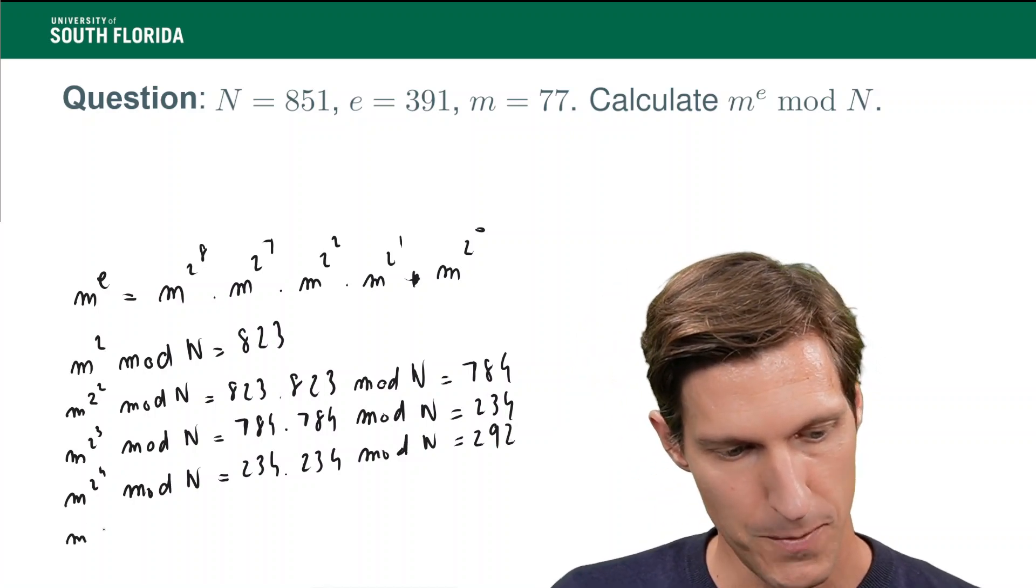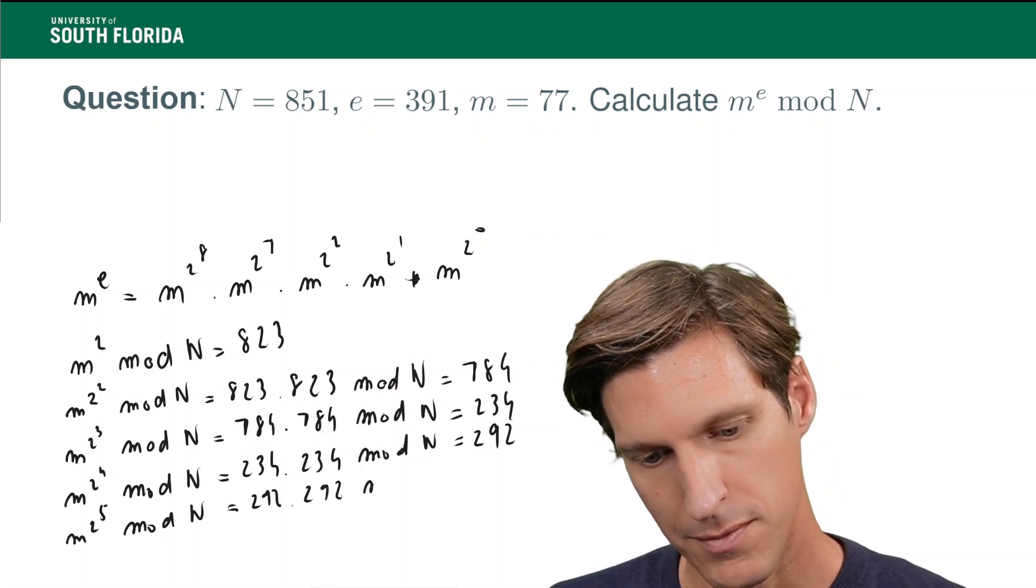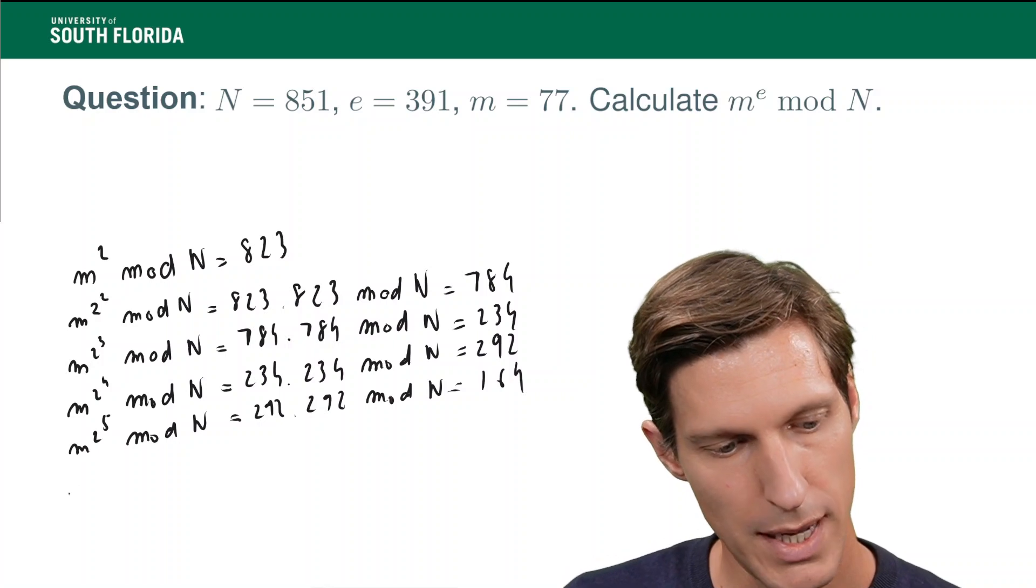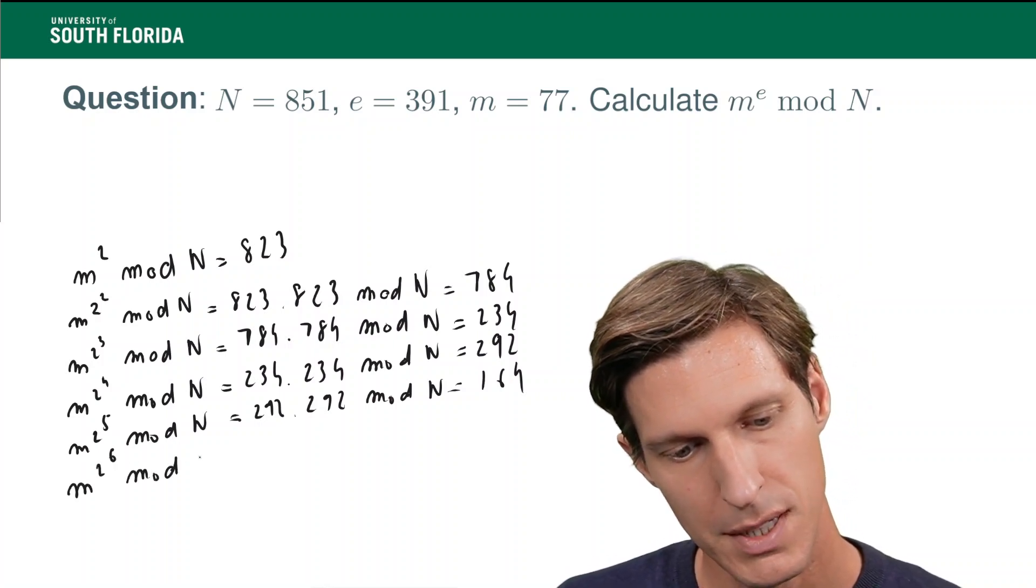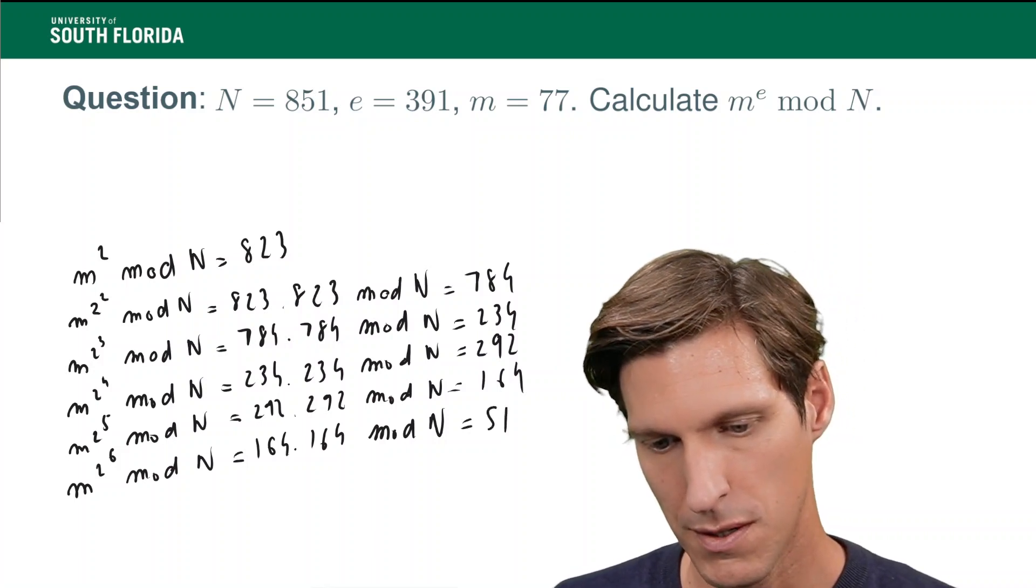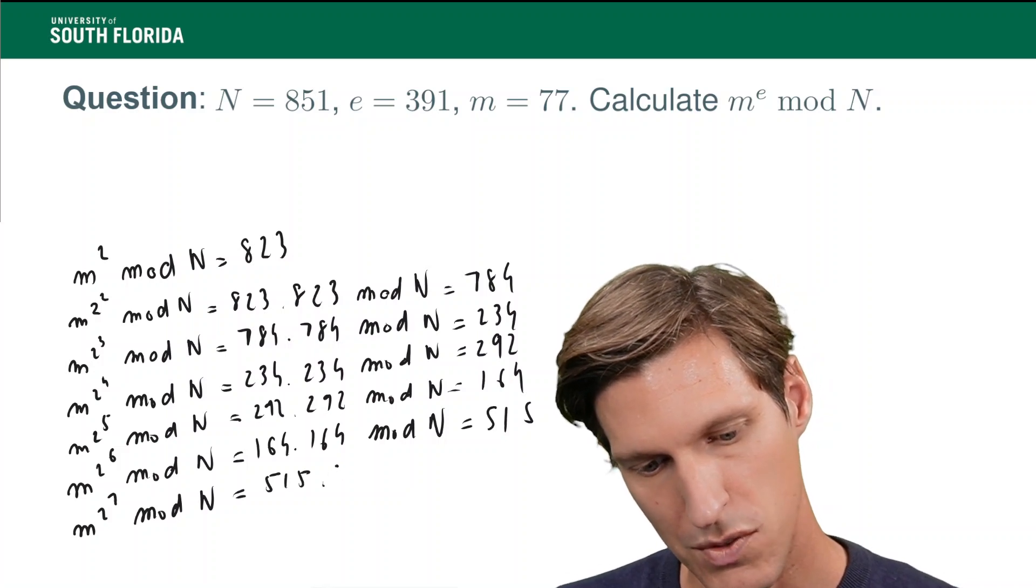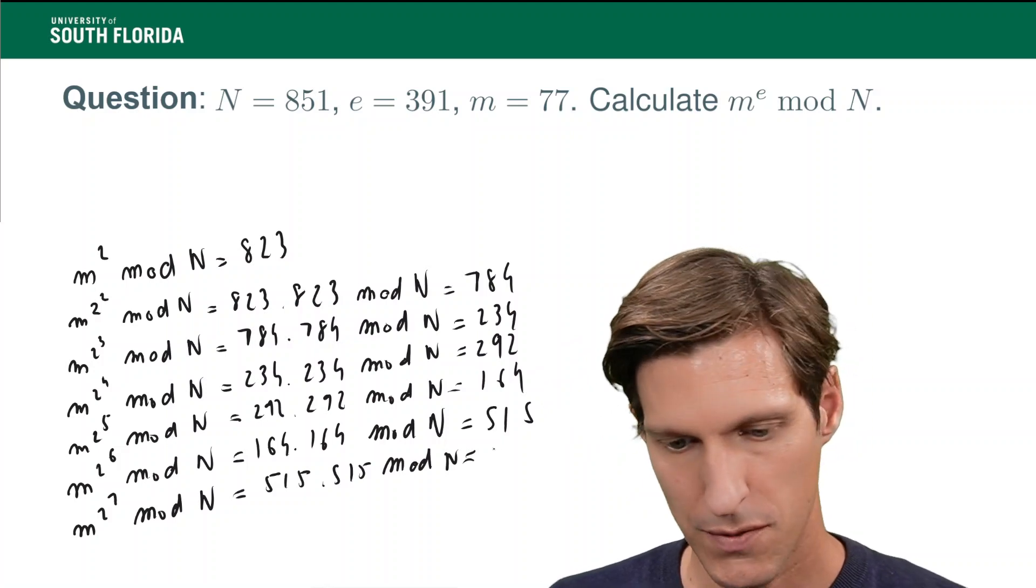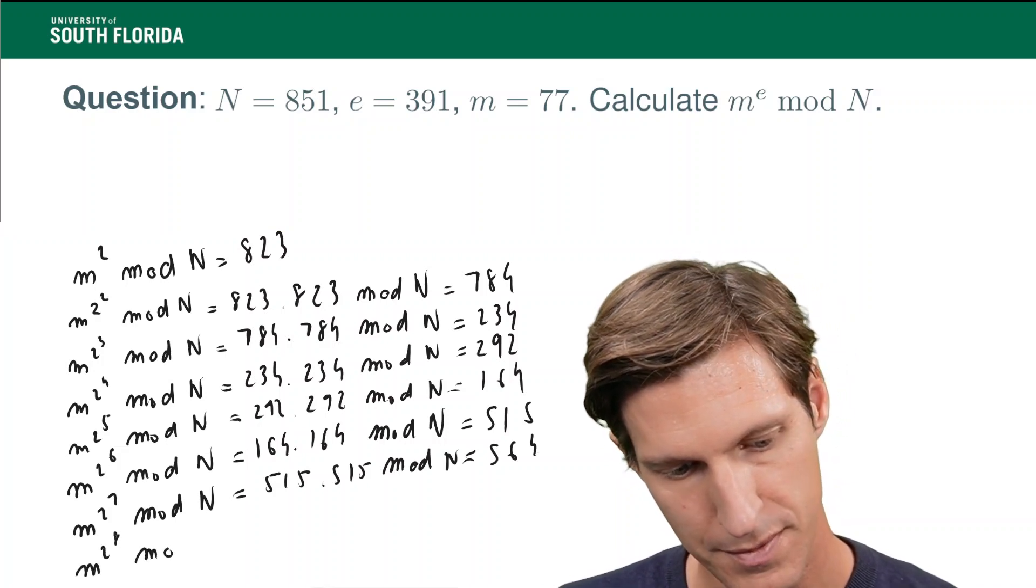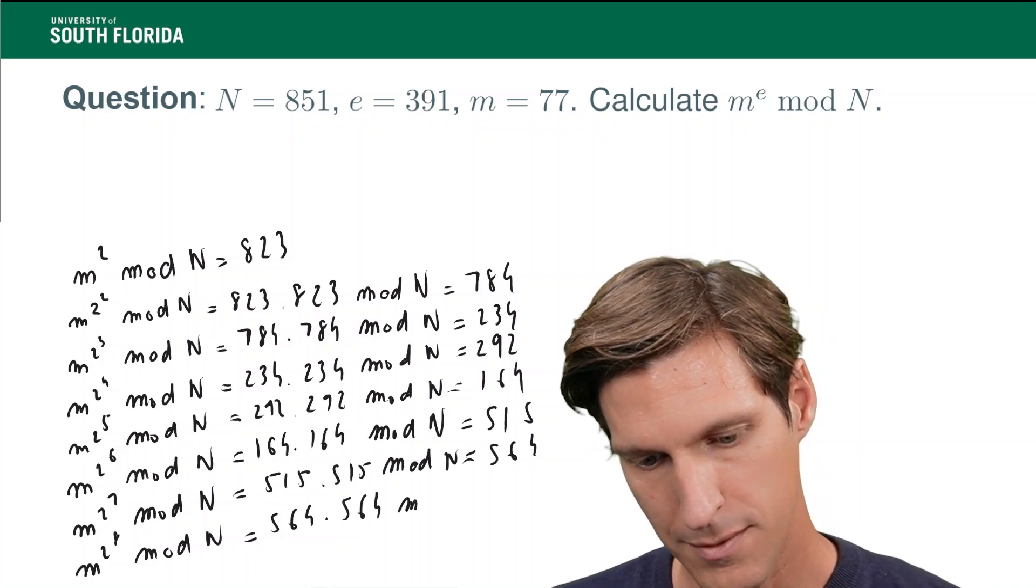I'm not doing this in my head, by the way. So, m to the two to the five mod n, that's 292 times 292 mod n, and that's 164. Now, I'm gonna have to scroll up a bit. So, m to the two to the six mod n, that's 164 times 164 mod n, and that is 515. Now, m to the two to the seven mod n. That's 515 times 515 mod n, and that is 564. And finally, m to the two to the eight mod n. So, 564 times 564 mod n.